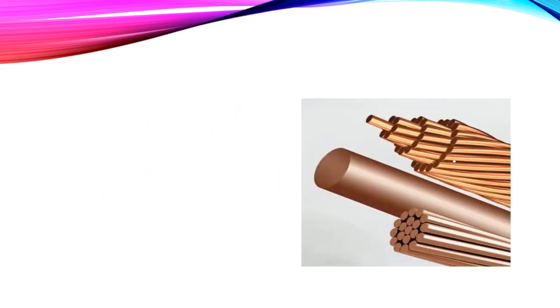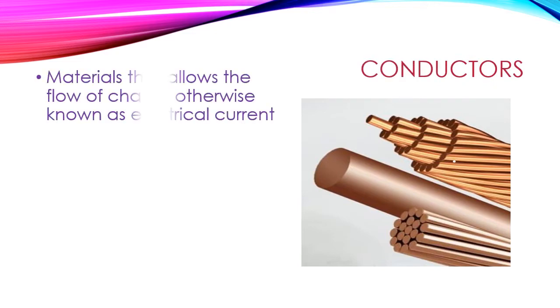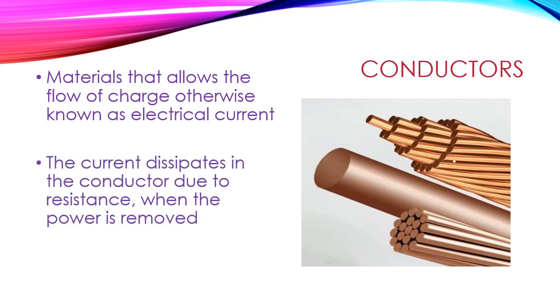Let us first look at what is conductor. These are the materials that allow the flow of charge which is otherwise known as electrical current. But the current dissipates in the conductor due to resistance when the power is removed.